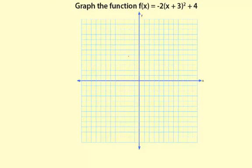Graph the function f of x equals negative 2 times x plus 3 squared plus 4. This is a quadratic function because of the squared and it's in vertex form.